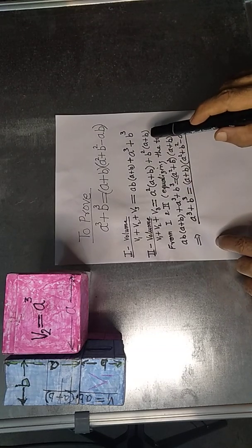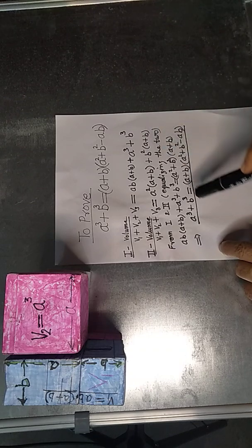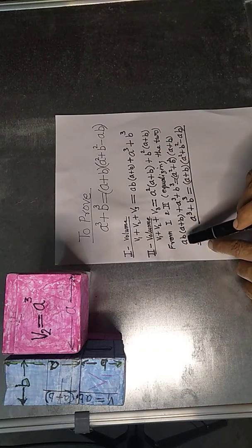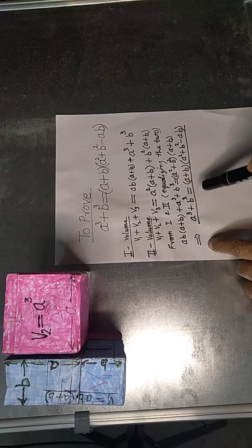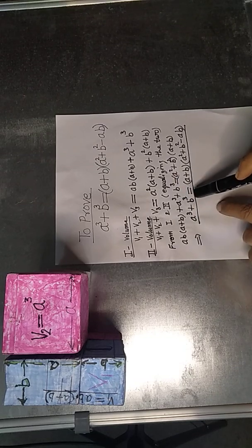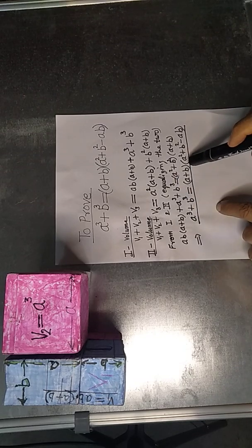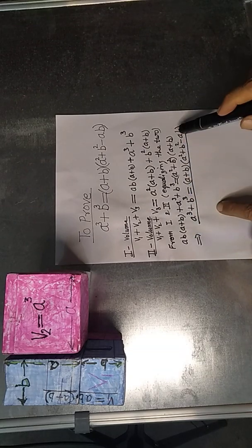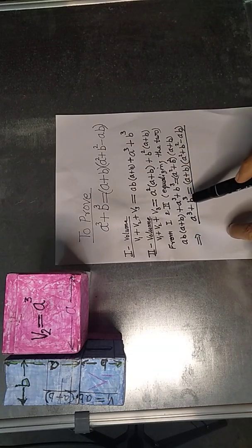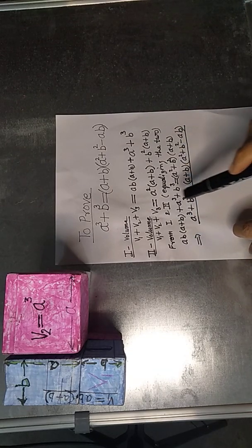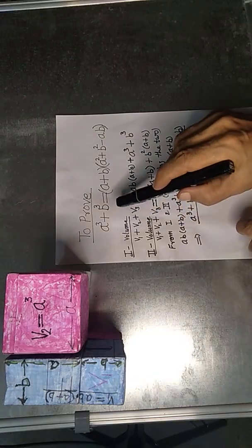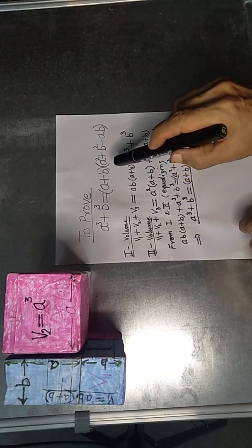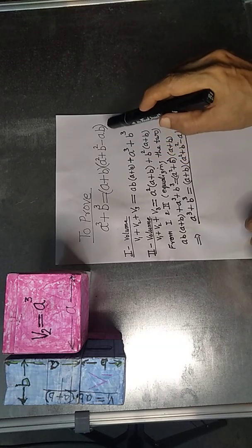Taking a plus b in common from the right-hand side, we get: a cube plus b cube is equal to a plus b into a square plus b square minus ab. This is the proof of the identity a cube plus b cube is equal to a plus b into a square plus b square minus ab.